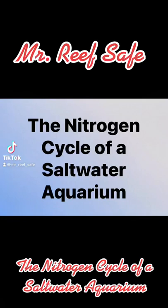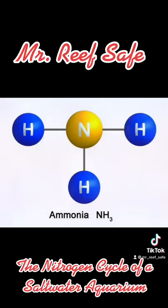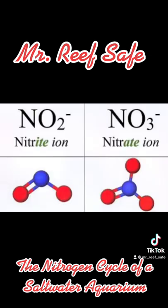The nitrogen cycle of a saltwater aquarium. The nitrogen cycle consists of ammonia or NH3, nitrite or NO2, and nitrate or NO3.